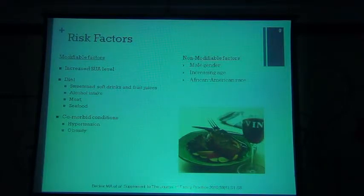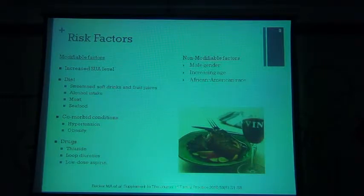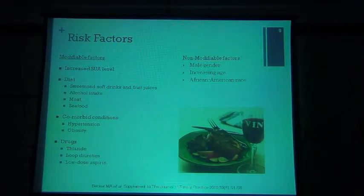Hypertension and obesity are associated with gout, as are certain drugs — particularly diuretics, loop diuretics. This is a common MRCP question. Low-dose aspirin interferes with the secretion and reabsorption of uric acid in the loop of Henle, thereby increasing uric acid levels, whereas high-dose aspirin is uricosuric.